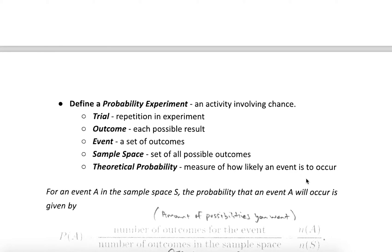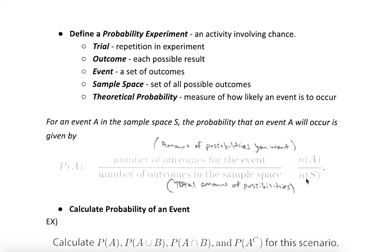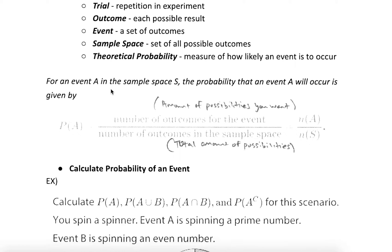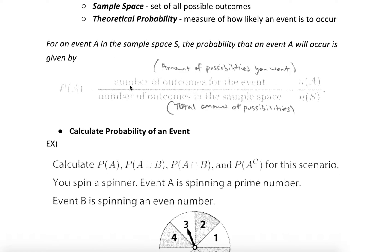Let's take a break from that for a minute. We're going to talk about probability, and then we'll come back and put it all together. Probability can be quite complicated the farther you go with it — in this video, we're just going to talk about the basics. In a probability experiment, I'm going to focus on an event, which is just a set of outcomes that we might want, and the sample space, which is the set of all possible outcomes. To find probability, we set up a fraction or a ratio: the number of outcomes of an event compared to the number of outcomes in the sample space — the amount of possibilities I want compared to the total amount of possibilities.